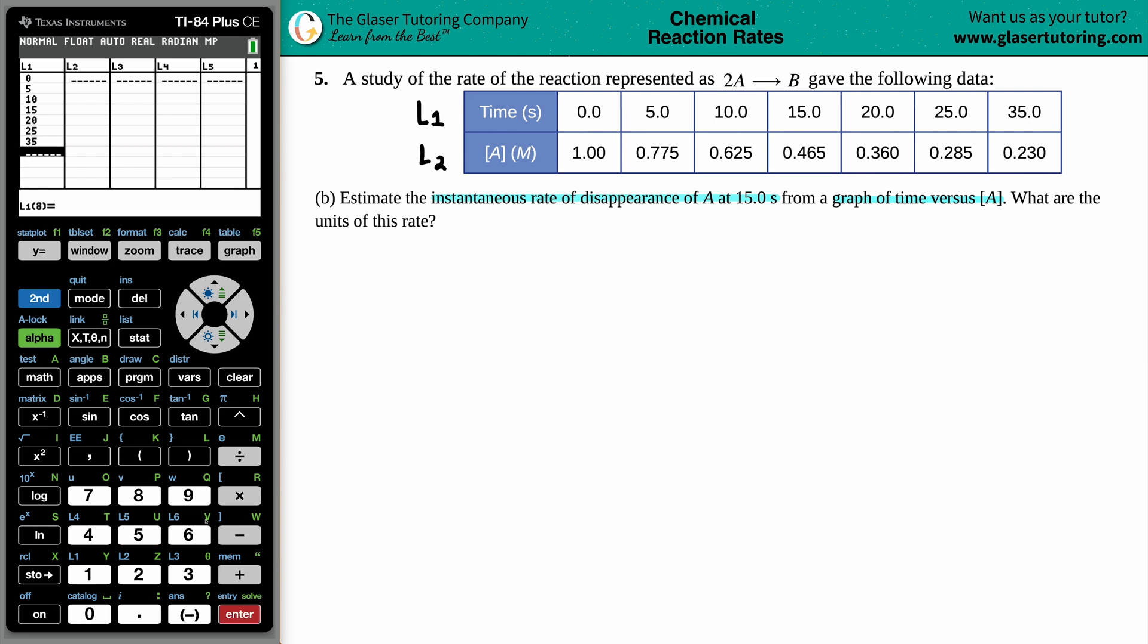Calculator doesn't really understand sig figs. But if you hover over this, oh, actually, it took away the 0.0. So it doesn't really matter. But as far as when we're doing math, I'll try to keep in mind for sig fig values. So let's go over to our next list. And we're just going to plug in all the molarities. So we have 1.00. We have 0.775. 0.625. 0.465. 0.360. 0.285. And 0.230. Okay, beautiful. So our list is in.